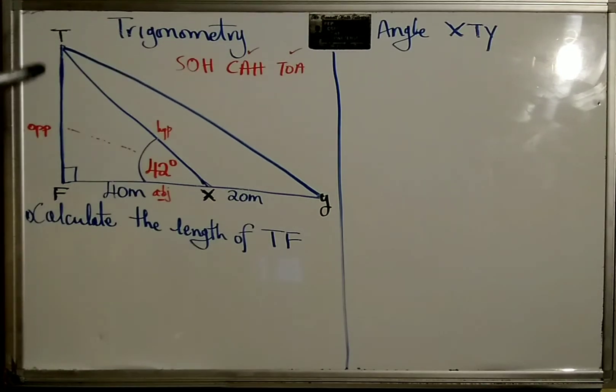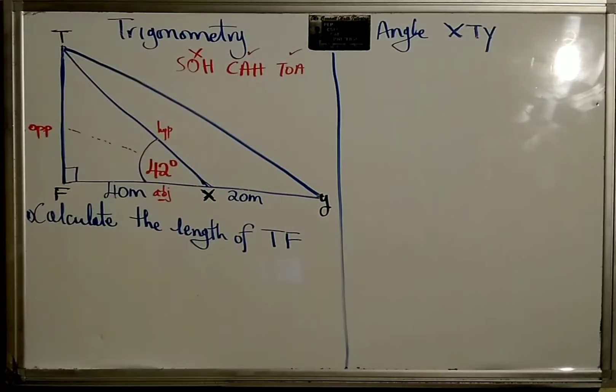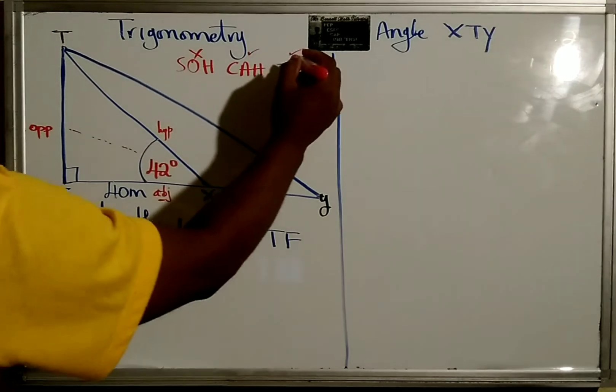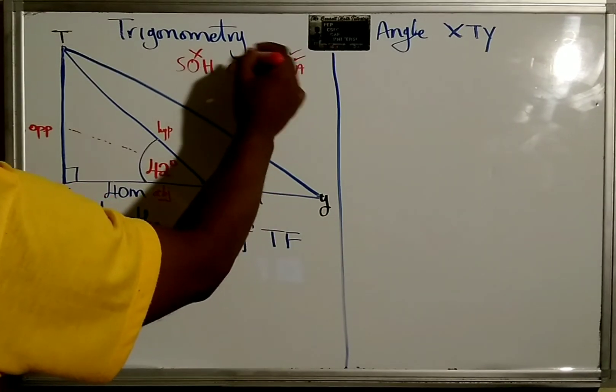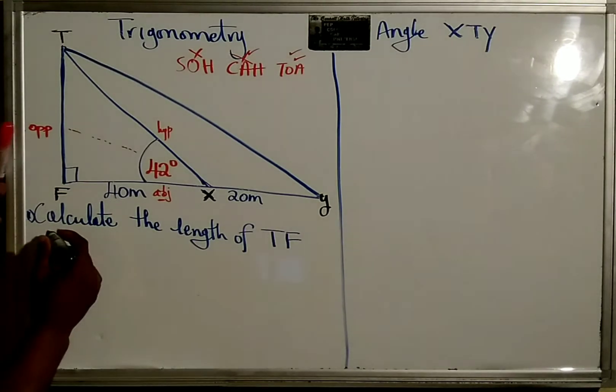But we then look for the side we're looking for, which must include it. We're looking for the opposite. So we could eliminate cos. We're looking for opposite, so this is opposite also - it's tan.